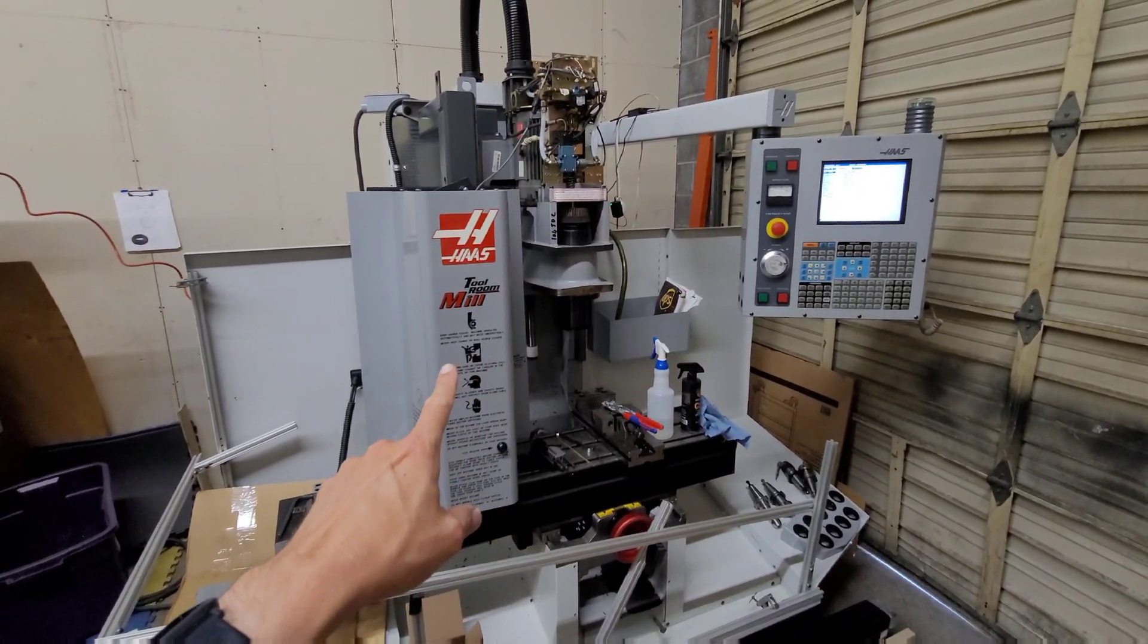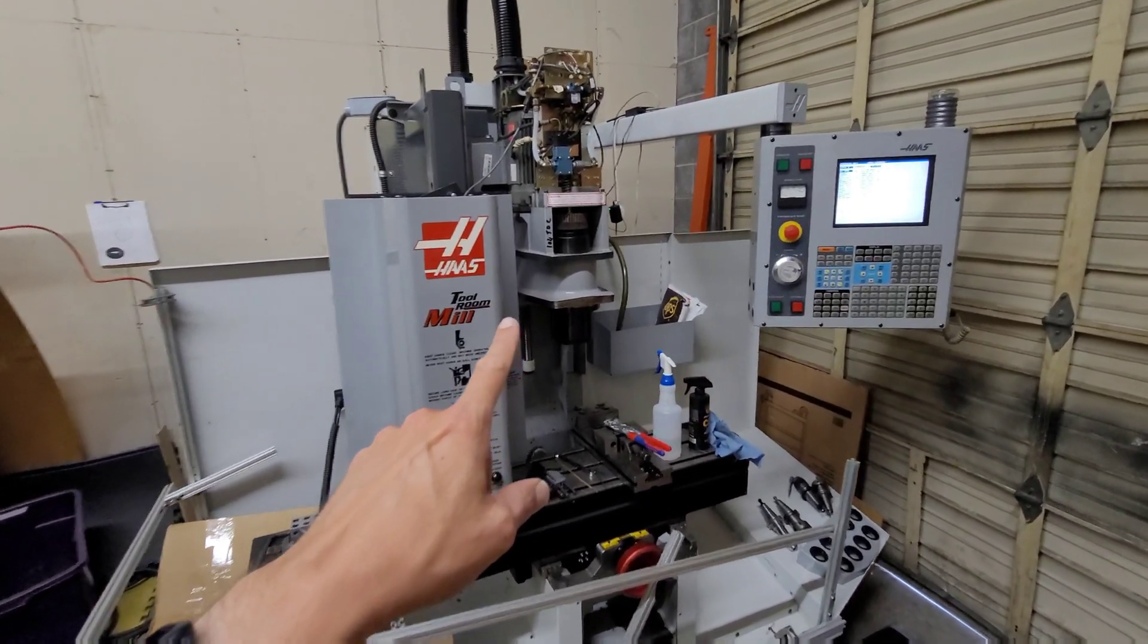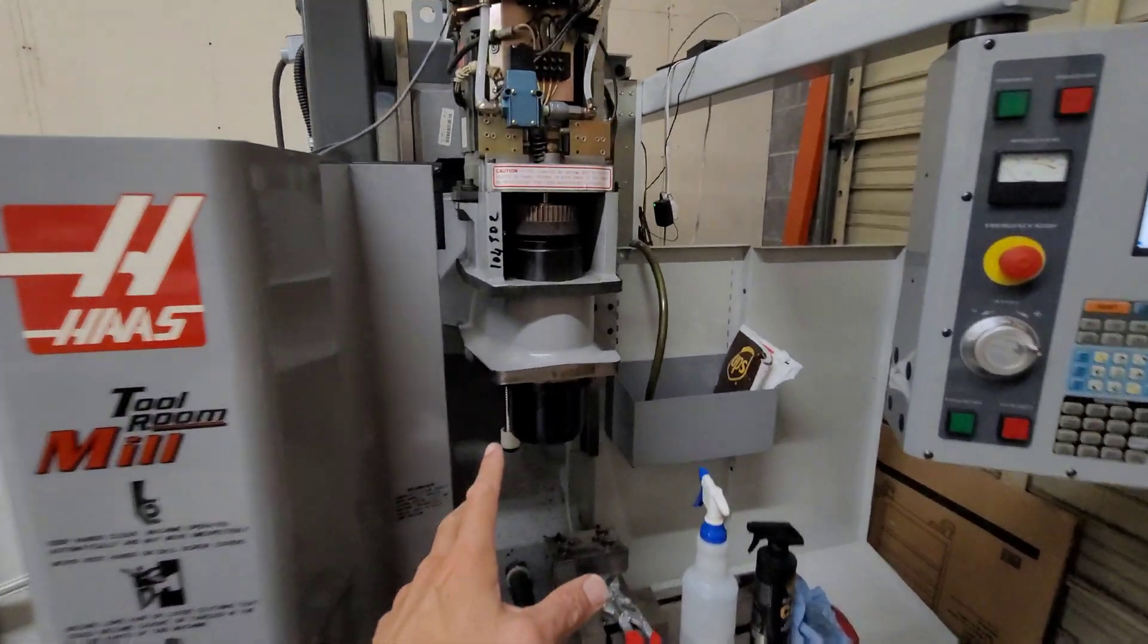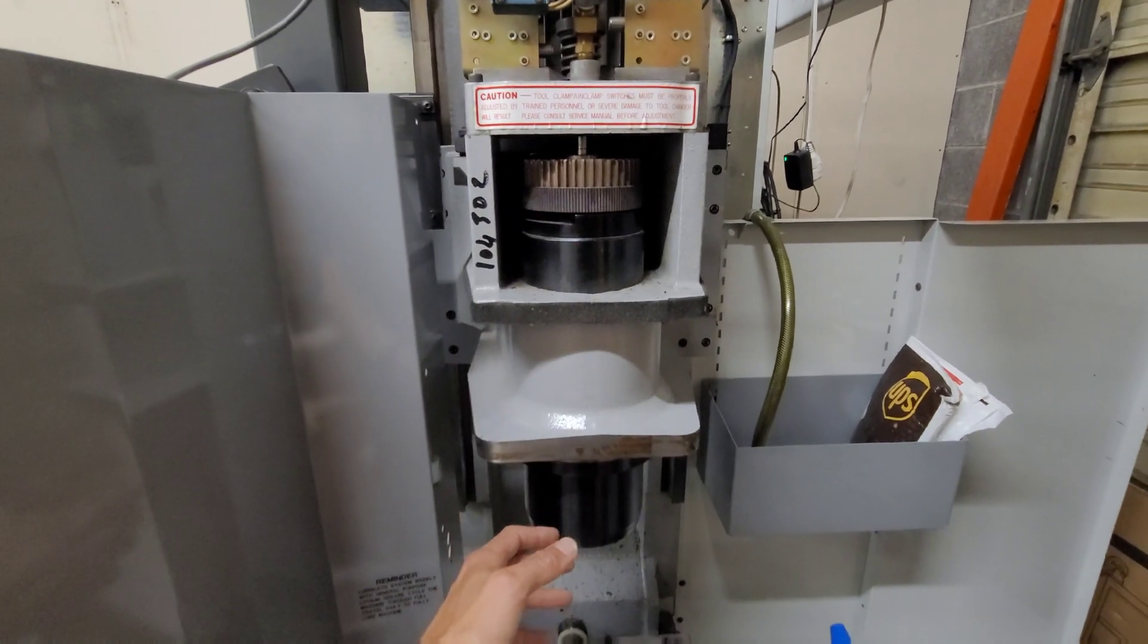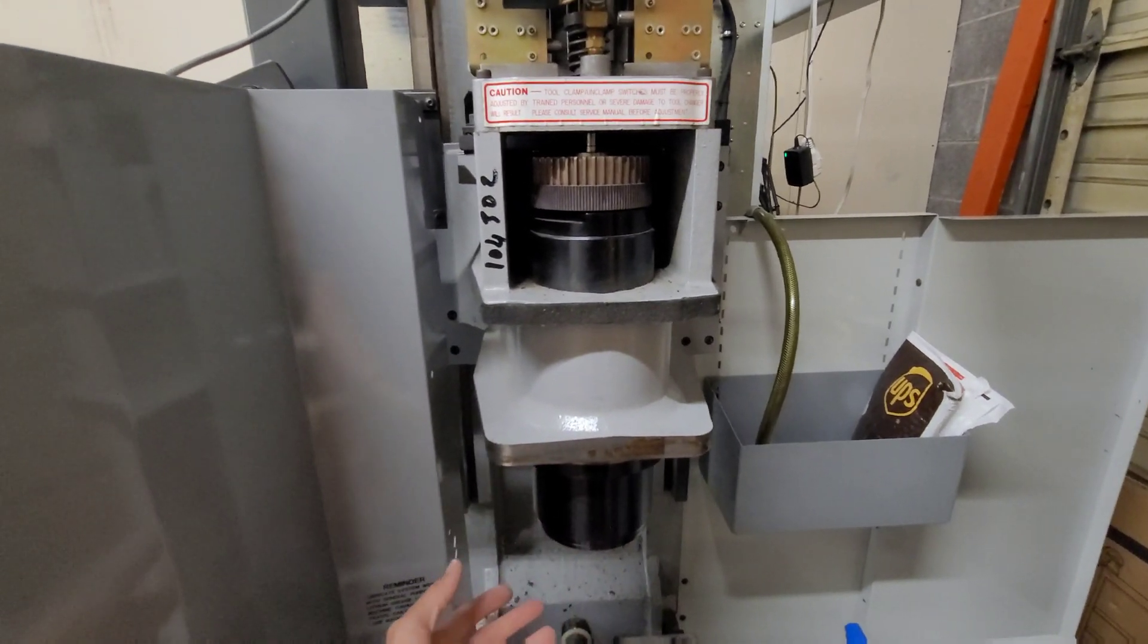Okay, so I've removed the cover off the Haas TM1 because we're having trouble with the tool release. The tool release was not releasing all the way and the air that's supposed to come through the spindle and clean it out was not coming out. It was clogged.